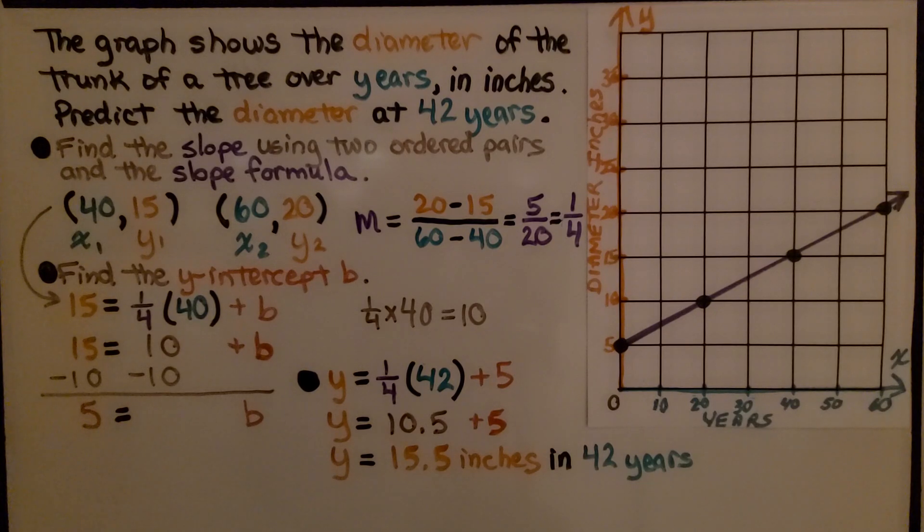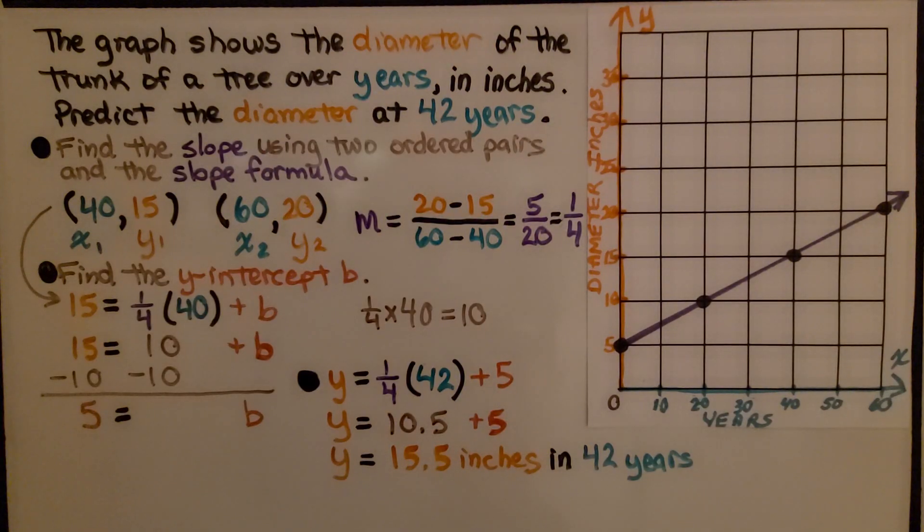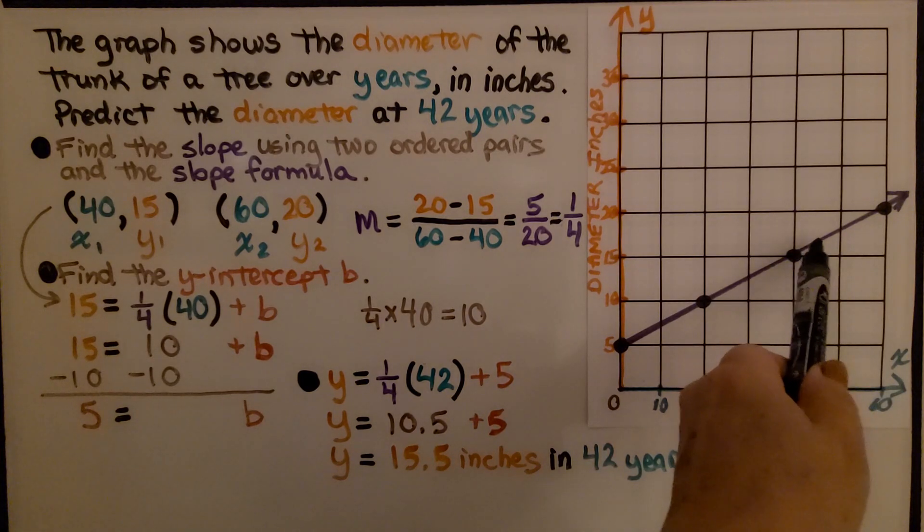For this one, let's use the slope formula to find the slope and let's use inverse operations, additive inverses, to find the y-intercept b. The graph shows the diameter of the trunk of a tree over years. So here we have our years for our x value and the diameter in inches for our y value. Predict the diameter at 42 years. We can see the years are given in increments of 10. We've got to find 42 years right here.